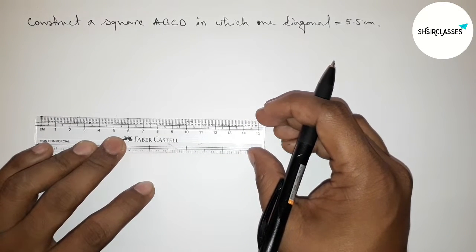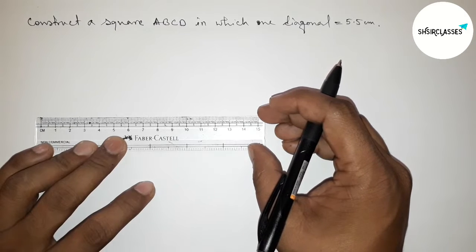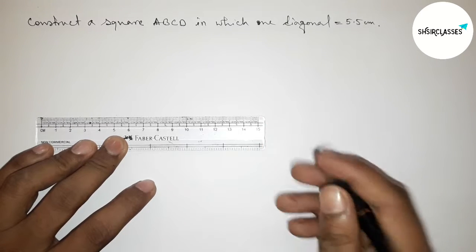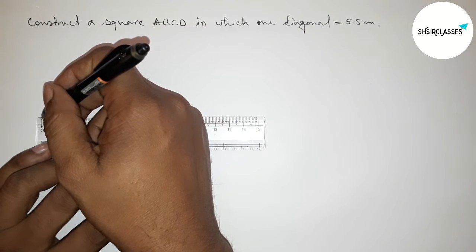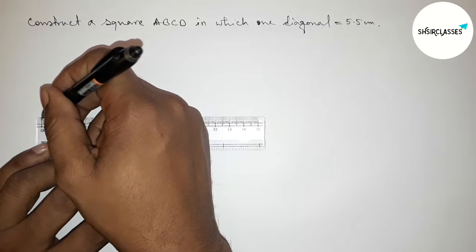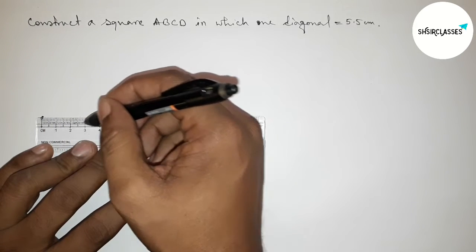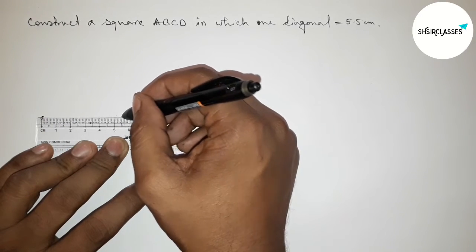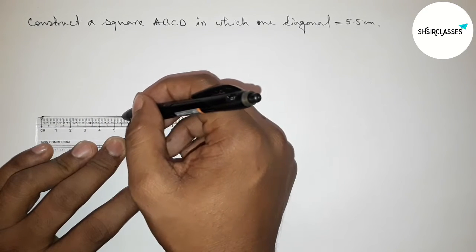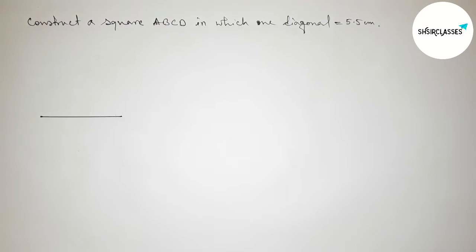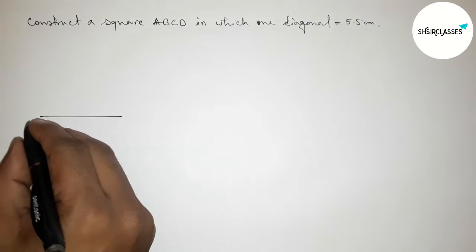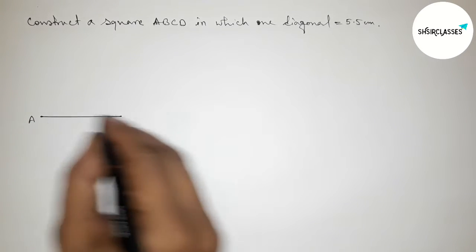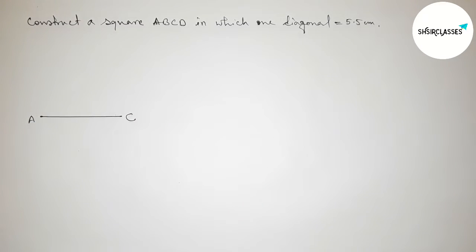First of all, with the help of a scale, we draw the diagonal of 5.5 centimeters. This is the starting point 0, and this is the 5.5 centimeter line segment. Now taking point A at one end and point C at the other end.